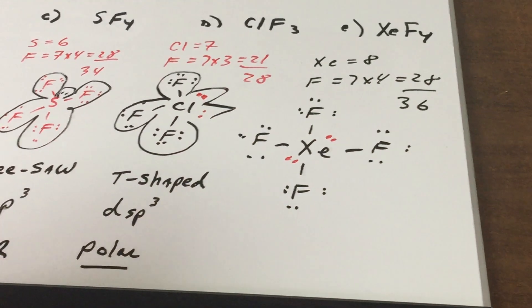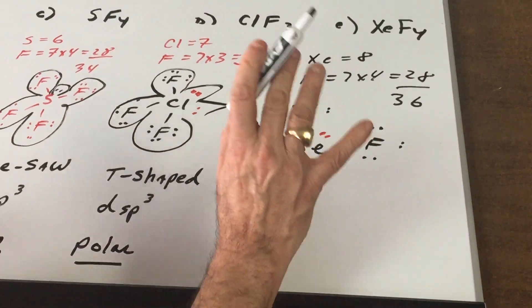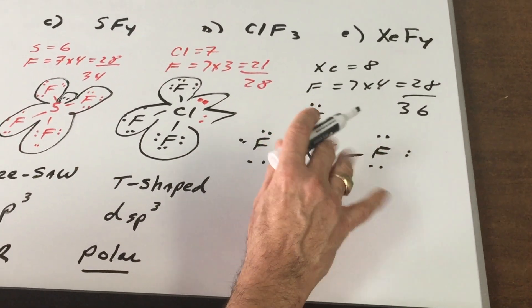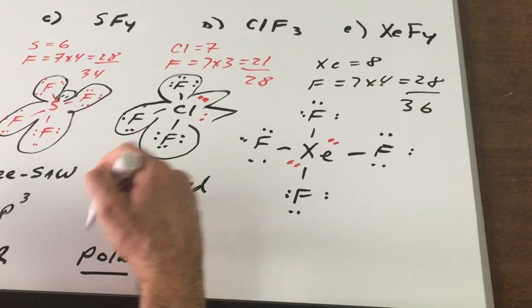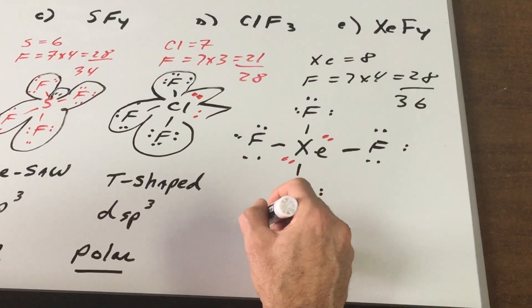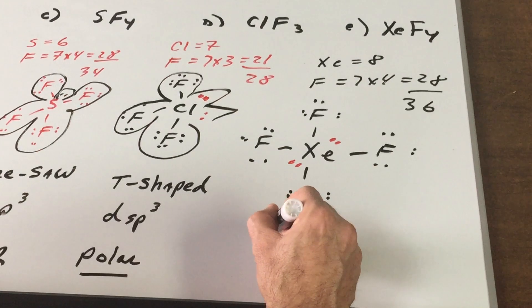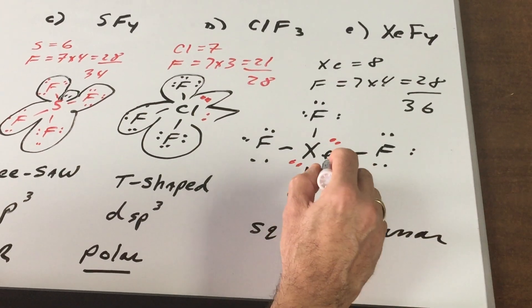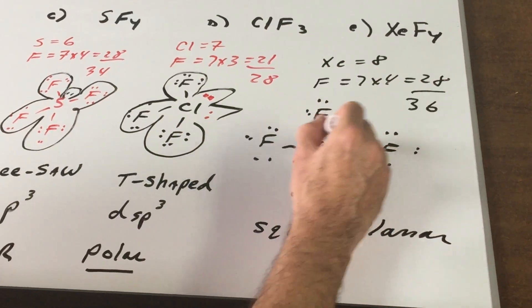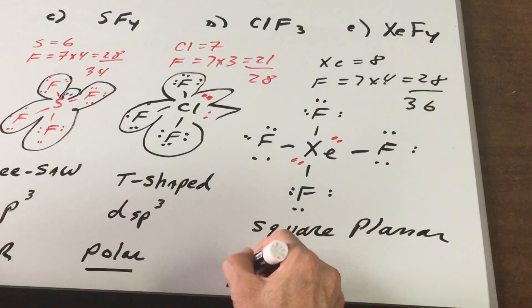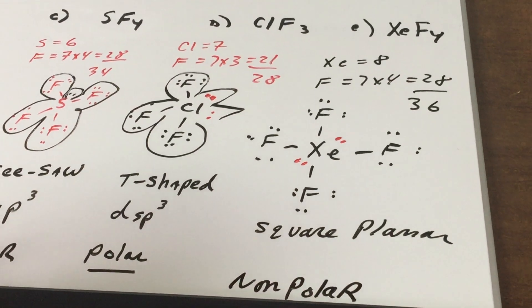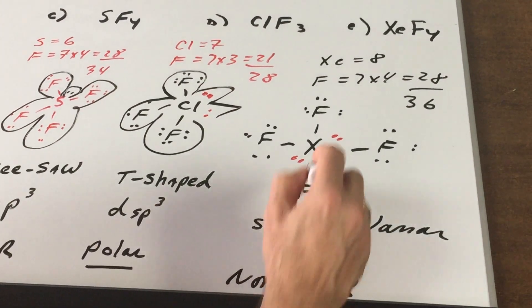Now this is tricky because usually when you see unshared electrons, what that means is that it's going to be polar. But not in this case, because this molecule is going to be what we call a square planar. Because it's planar, that means that these two can cancel each other out. That's a hard one. We got a nice question on this in the DAT Destroyer. This would be non-polar.